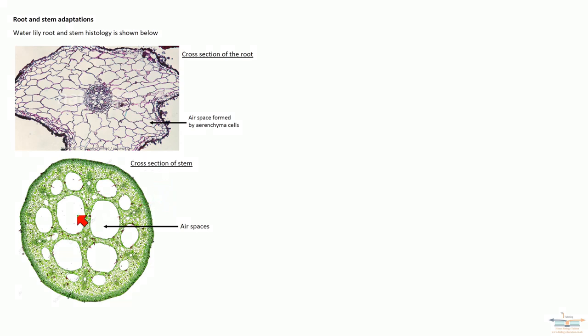With the stem, then, you can see air spaces. Now, these are not formed by aerenchyma. These are just air spaces in between the cells within the stem. So again, there won't be much lignification in these tissues because it's not needed.